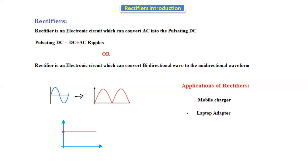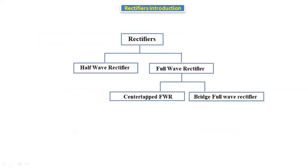To get DC we use a rectifier, because the battery cannot store AC — it stores only DC. Other devices like the regulated power supply (RPS) used in our laboratory also require DC. All devices which require DC use rectifiers, since without a rectifier we cannot convert AC to DC.